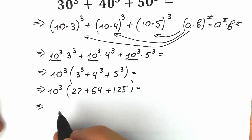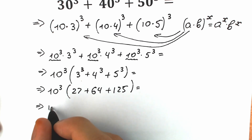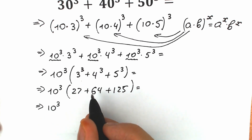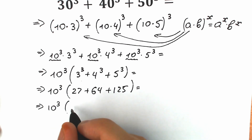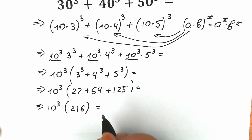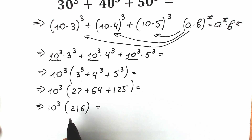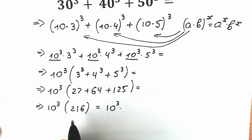10 cubed is 10 times 10 times 10, which is 1000, but let's leave it as 10 cubed. And 27 plus 64 plus 125 equals 216. This is a really great moment — 216 can be expressed as 6 cubed. So as a result, we have 10 cubed times 6 cubed.